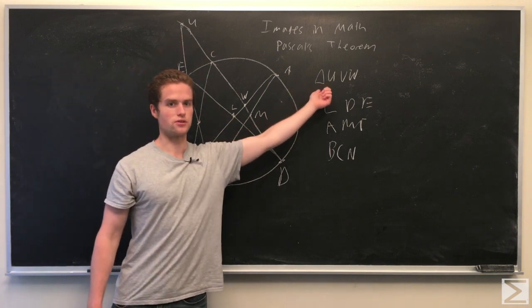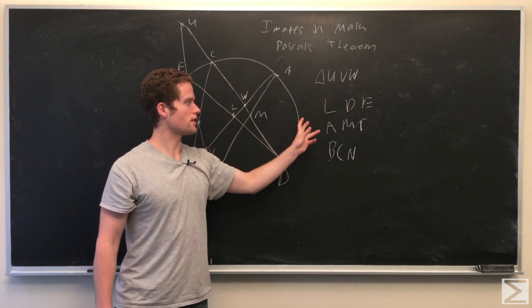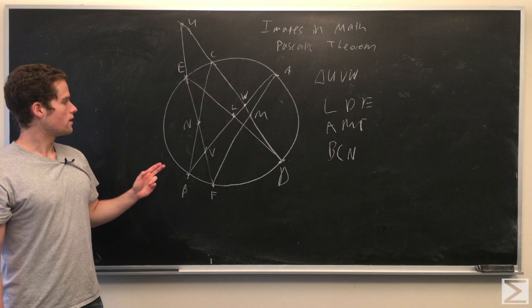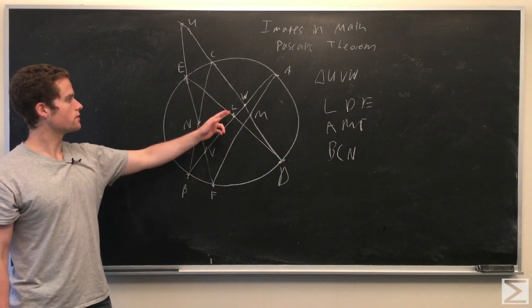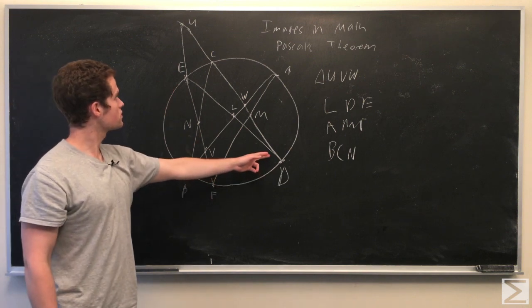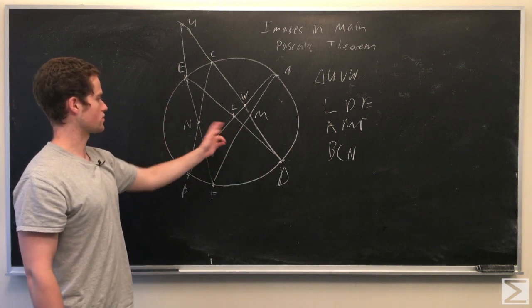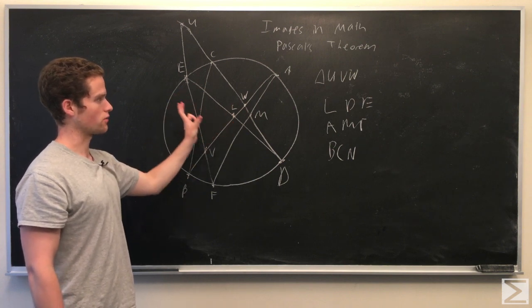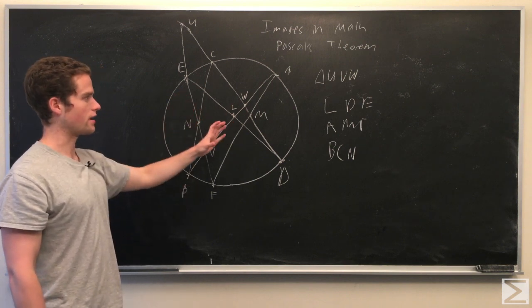This is the triangle we're going to use in Menelaus's Theorem. We're going to use three lines, L, D, E, A, M, F, B, C, N. So take D, E, find the intersection with the line V, U, L. We know that's collinear, similarly with A, M, F, and B, C, N.